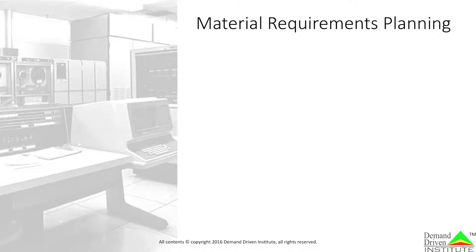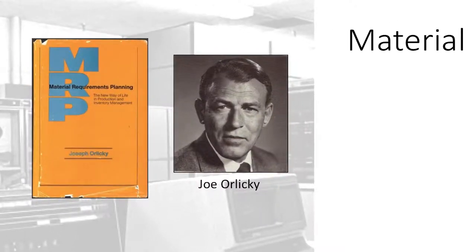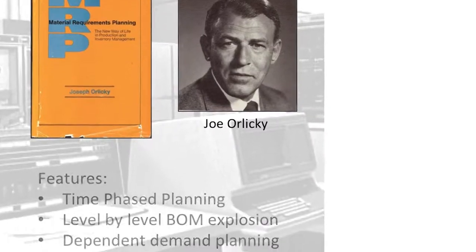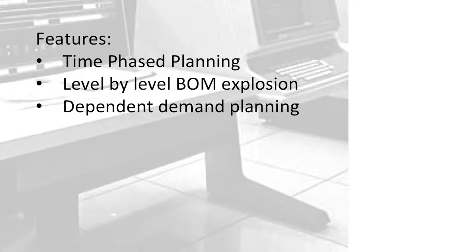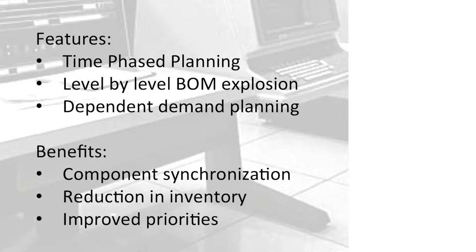The availability of the computer ushered in the era of MRP. Joe Orlicky brought MRP into the mainstream in his 1975 book, Material Requirements Planning, a new way of life for production and inventory management. MRP was a revolution for industry. It featured time-phase planning, level-by-level bill of material explosion, and dependent demand planning. It promised to synchronize all component needs to end item demand, reduce inventory, and improve the ability to prioritize. It changed the way of life in manufacturing.